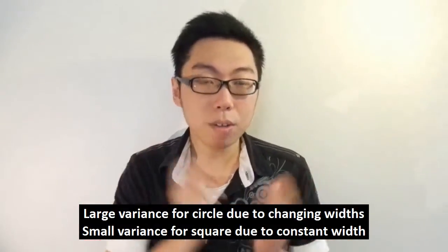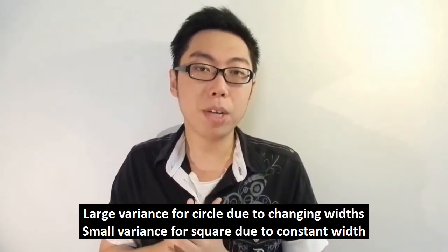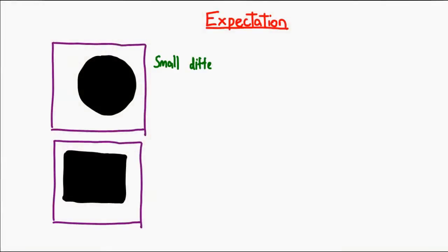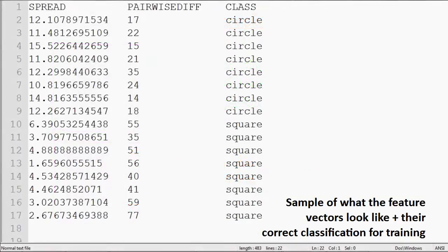Theoretically, if we have a circle, the variance will be large, whereas if we have a square, the variance will be very little. This will be our first of two feature vectors. Our second one compares the biggest difference between two consecutive lines. Theoretically, this value will be small for a circle and large for a square. So what we have are two feature vectors that are generated for every image.